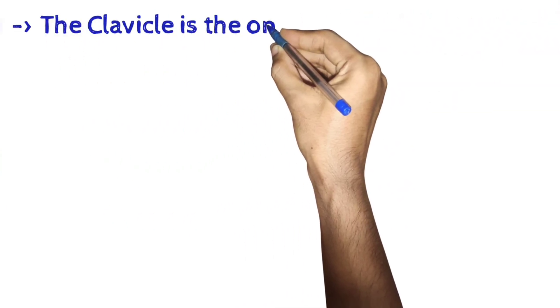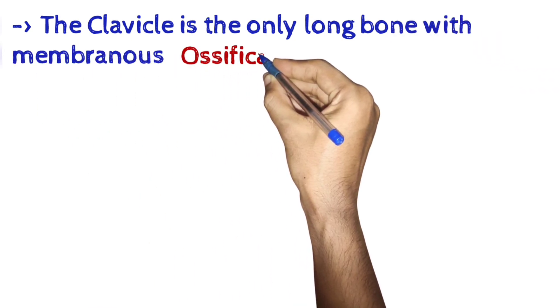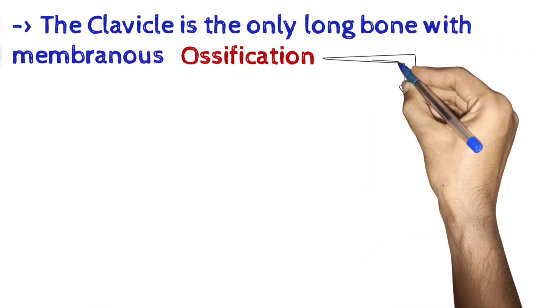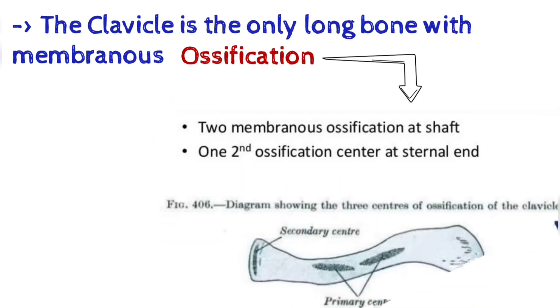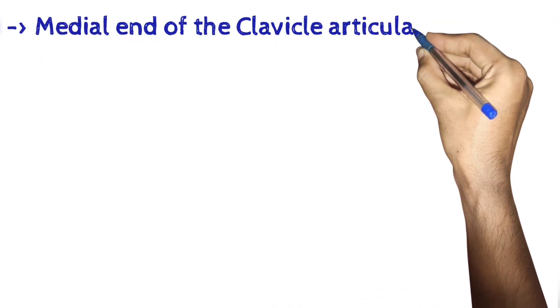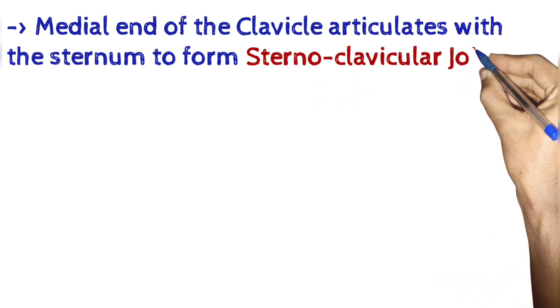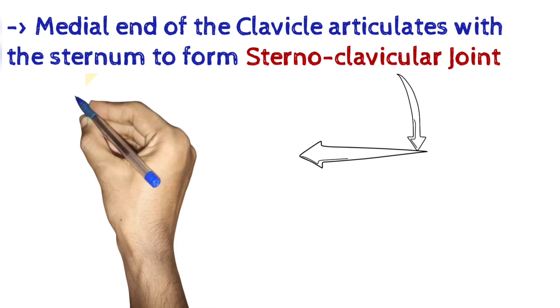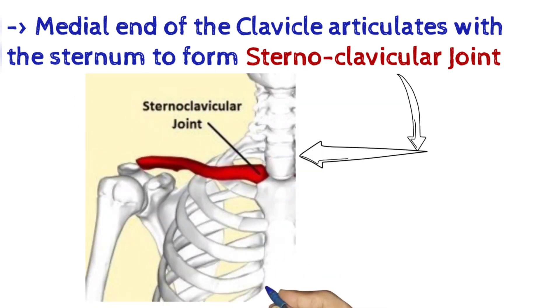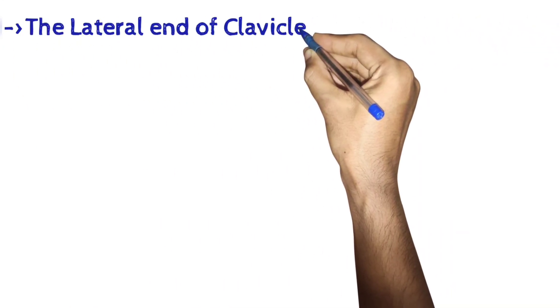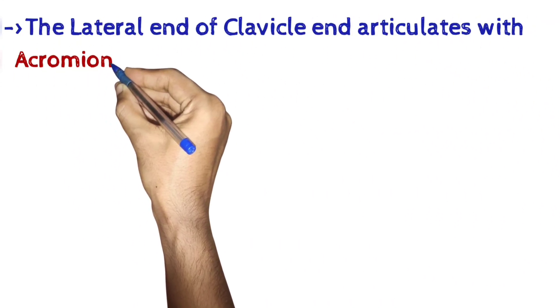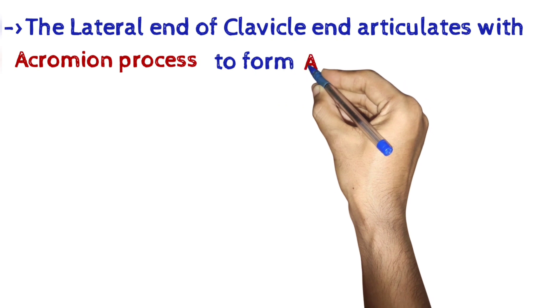The clavicle is the only long bone with membranous ossification. Medial end of the clavicle articulates with the sternum to form sternoclavicular joint. The lateral end of clavicle articulates with acromion process to form acromioclavicular joint.